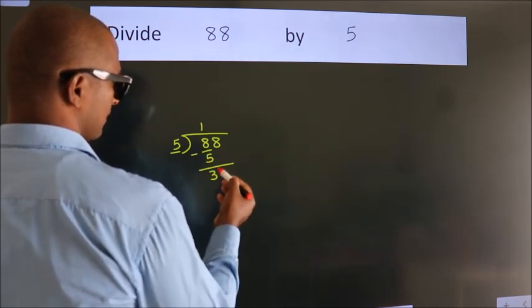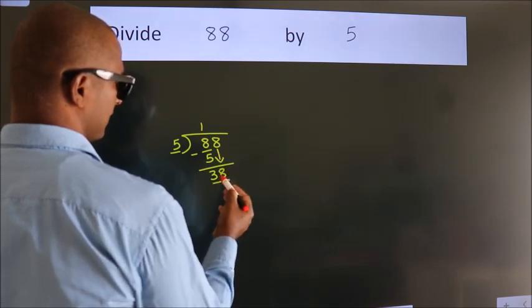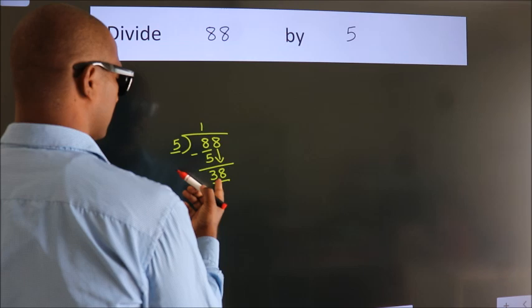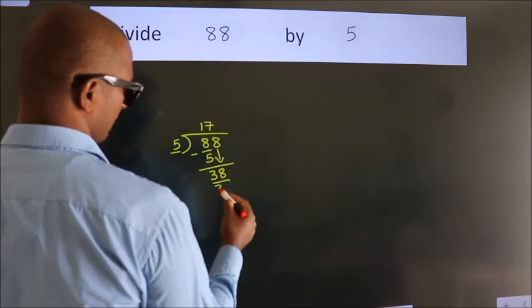After this, bring down the beside number. So 8 down, making 38. A number close to 38 in the 5 table is 5 sevens, 35.